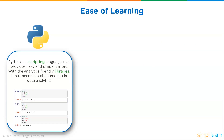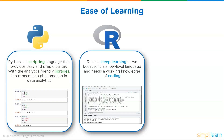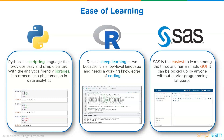Regarding ease of learning: Python is a scripting language with easy and simple syntax, and with analytics-friendly libraries it has become a phenomenon in data analytics, though the sheer number of modules can be hard to track. R has a steep learning curve because it is a low-level language requiring working knowledge of coding, though certain tasks in R are actually easier than in other languages. SAS is considered the easiest to learn among the three, with a simple GUI that can be picked up by anyone without prior programming experience — a key reason managers and team leaders pay for it.